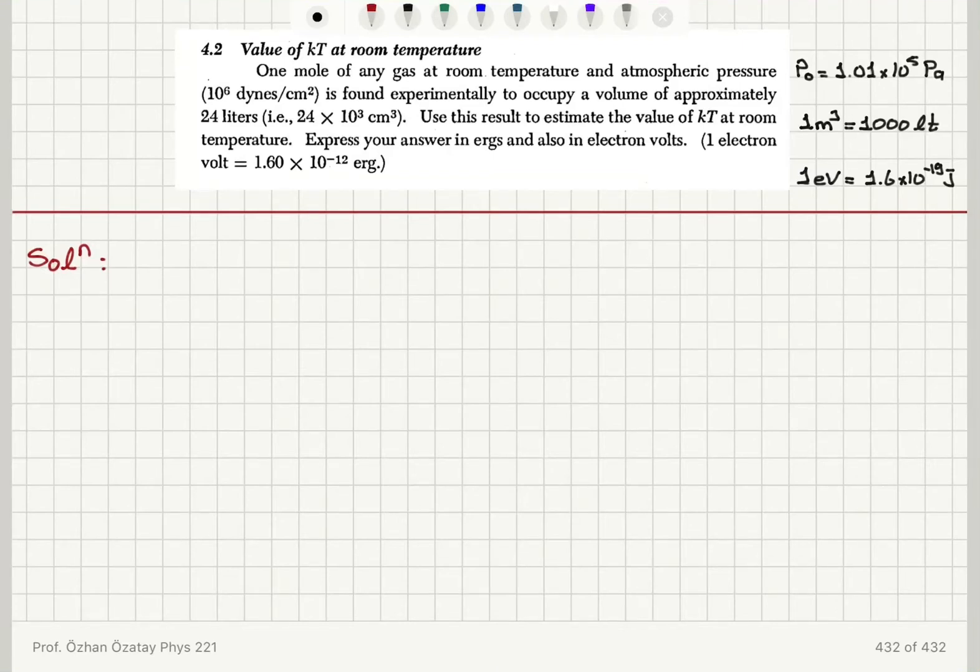Value of KT at room temperature. KT, if you remember, is also called thermal energy, Boltzmann constant times absolute temperature. One mole of any gas at room temperature and atmospheric pressure is found experimentally to occupy a volume of 24 liters. Use this result to estimate the value of KT at room temperature. Express your answer in ergs and also in electron volts. So we're not going to express in ergs, but we will express in joules and also in electron volts. And one electron volt is 1.6 times 10 to minus 19 joules.